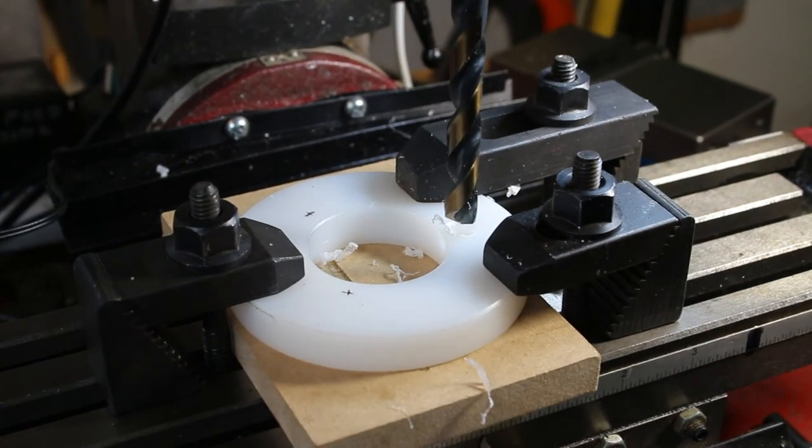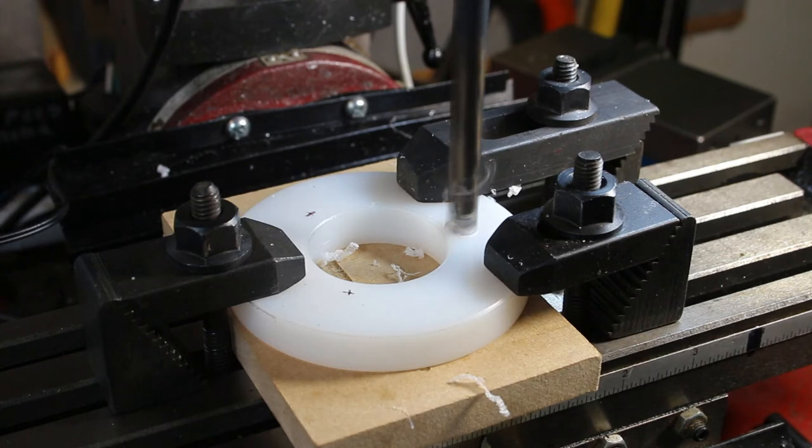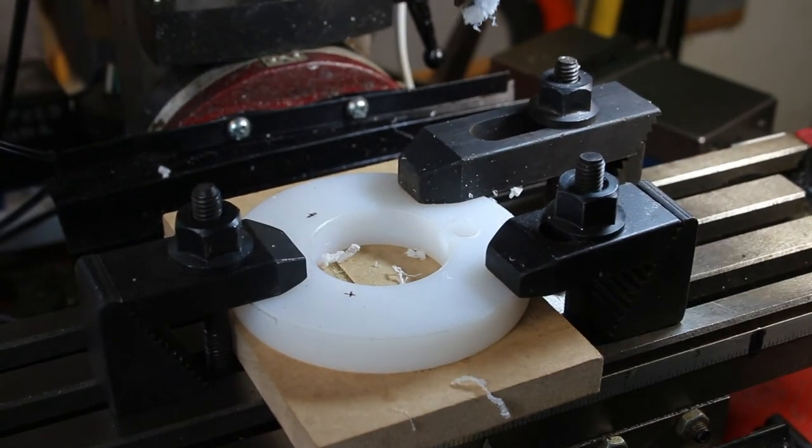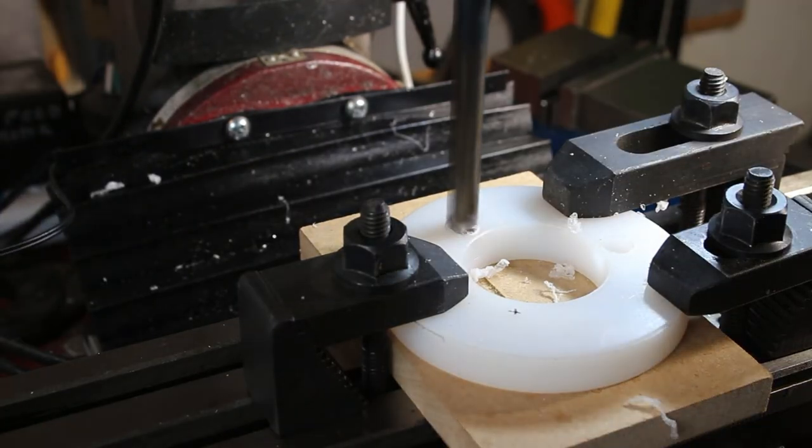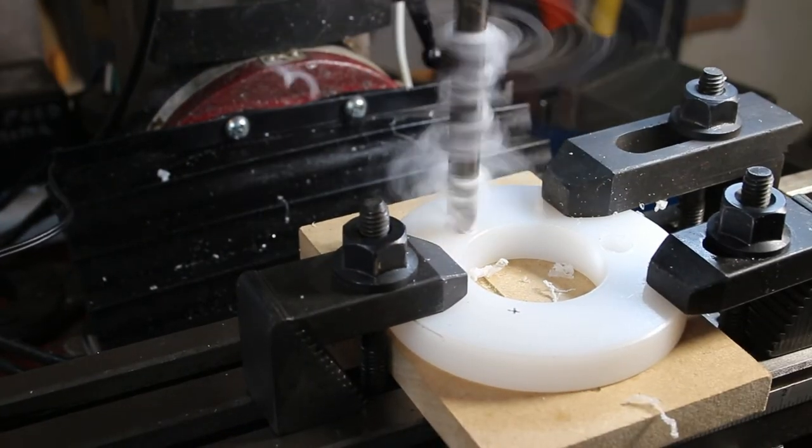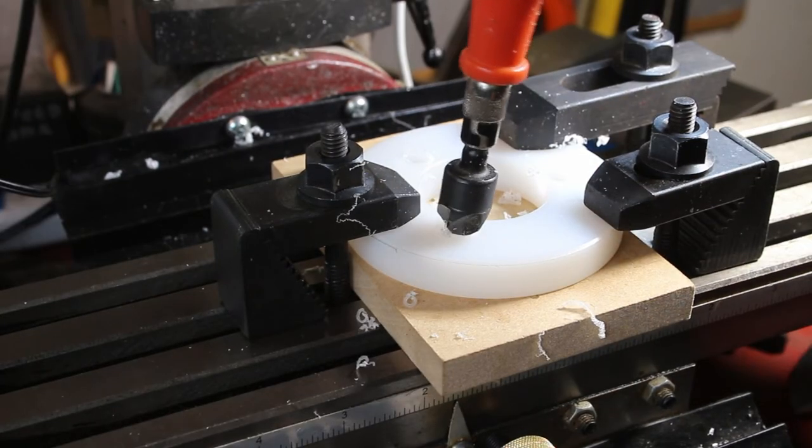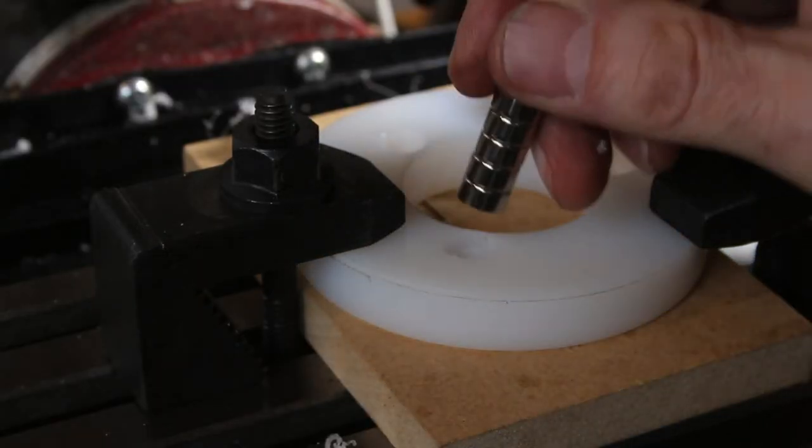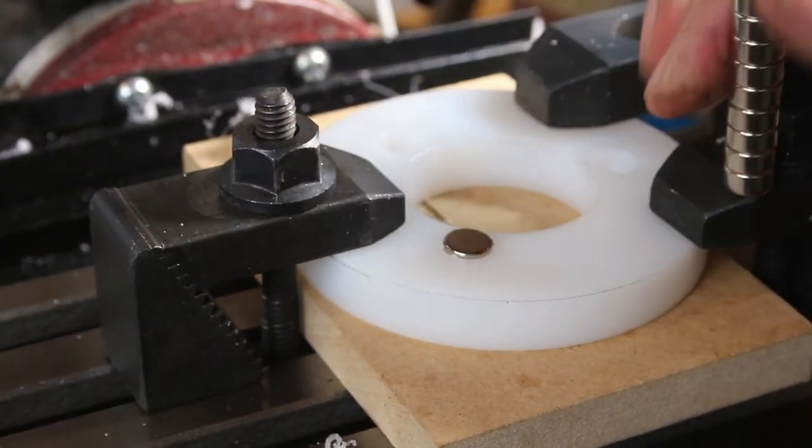That first hole was one drill size undersized, so now I'm going to sneak up on the final dimension. Let's see if that's going to fit. Oh, yes, that's going to fit very snugly. Deburring is tough with Delrin. It still wants to mung up a little bit. So here's a test fit of the magnet. It goes in, and it's going to protrude just enough that it's not hidden behind the plastic. There we are.